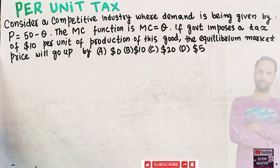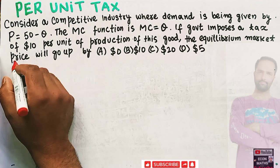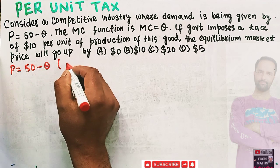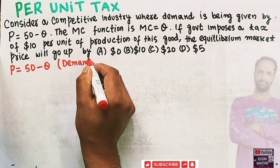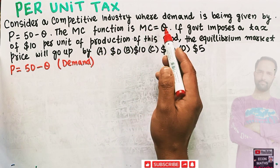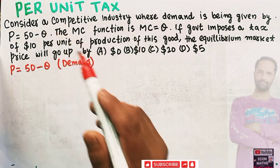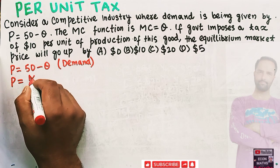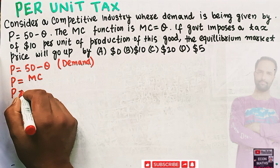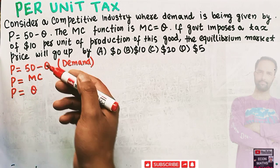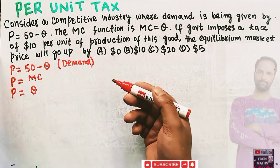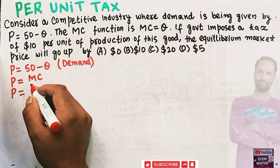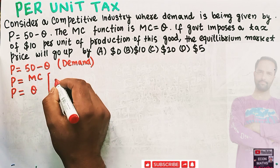Let's solve this question. We are given the demand function P = 50 minus Q. We are also told that marginal cost = Q. In a competitive market, we know price equals marginal cost, so P = Q. We also know that in a perfectly competitive industry, the supply function is actually the marginal cost, so P = Q represents our supply function.